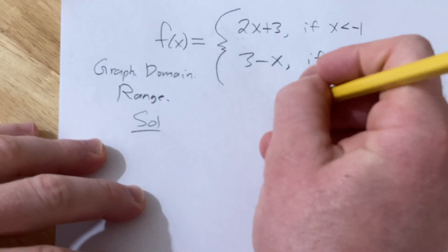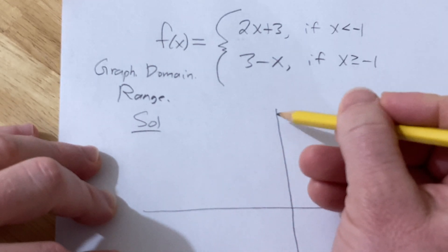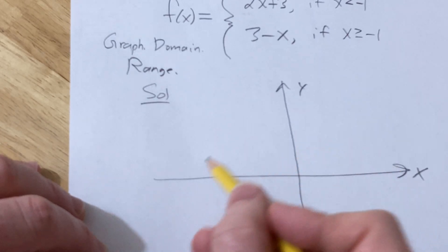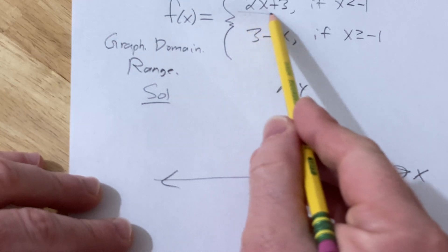So we'll start by drawing the y-axis and the x-axis. So there's x, there's y. Okay, so just a rough sketch. And let's start by graphing this one here.